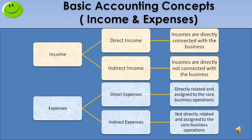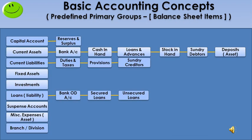Now you have some knowledge about asset, liability, income, and expense. Let me see how assets, liabilities, income, and expenses are defined in Tally. In Tally, assets and liabilities are further classified into 9 primary groups and 13 subgroups. Let us see them one by one.